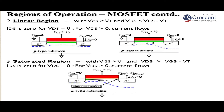In the linear region, the gate-to-source voltage is greater than the threshold voltage, meaning a channel is formed between source and drain, and Vds is less than (Vgs − Vt), called the gate effective voltage. As Vds increases, the drain-to-source current increases. The charge carriers in the channel move from source to drain, so current flows from drain to source.